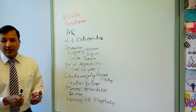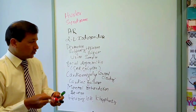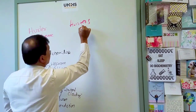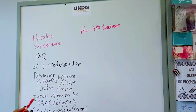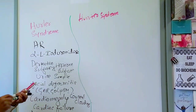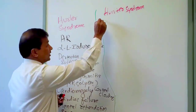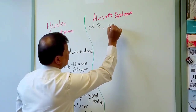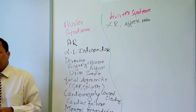Those are the signs to look for in Hurler syndrome. Now let's move on to Hunter syndrome. Hunter syndrome is an X-linked recessive condition, which means it predominantly affects males.